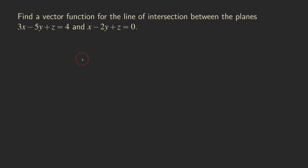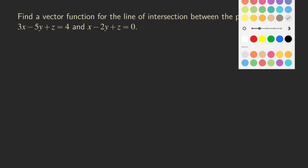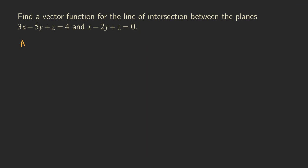So how do we find this? We actually have different ways of finding this, and we're going to show you both ways. So one way is to actually find two points on that line of intersection, and then use those two points to find our direction vector. So here's approach 1.